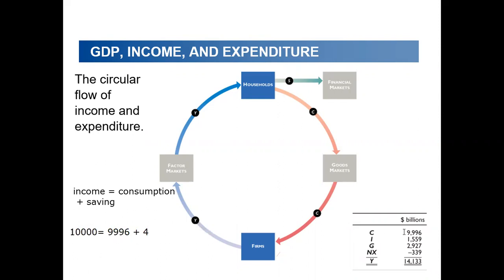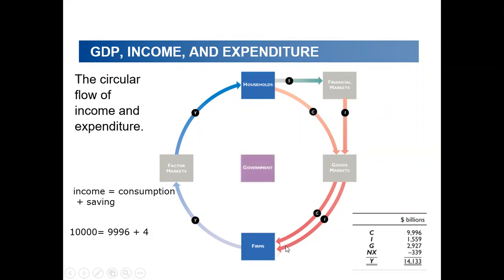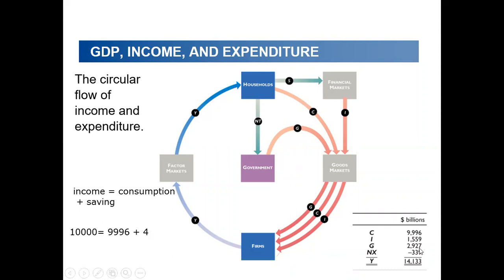The saving is deposited in banks (financial markets), and investors channel it to businesses for projects — this is investment. The accumulation of savings in banks can be channeled to firms in the form of loans. The government also plays a role: it has inflows from taxes and outflows as government expenditure. The government sector here represents $2,927.